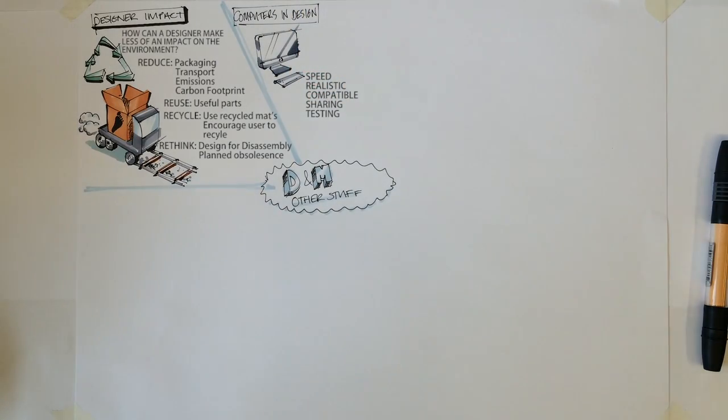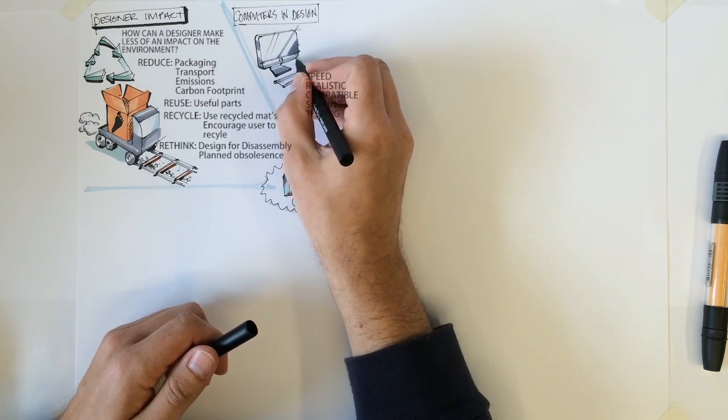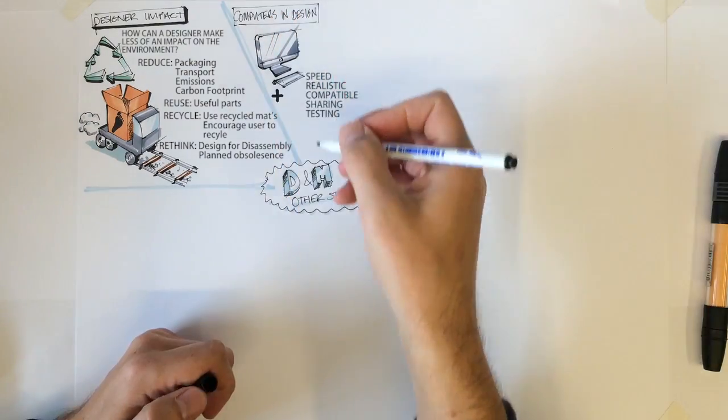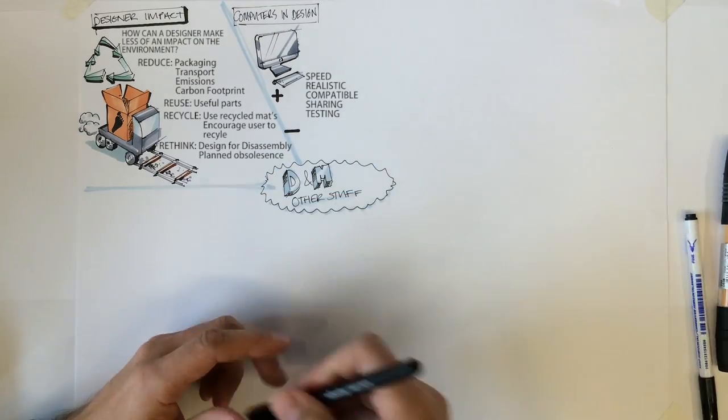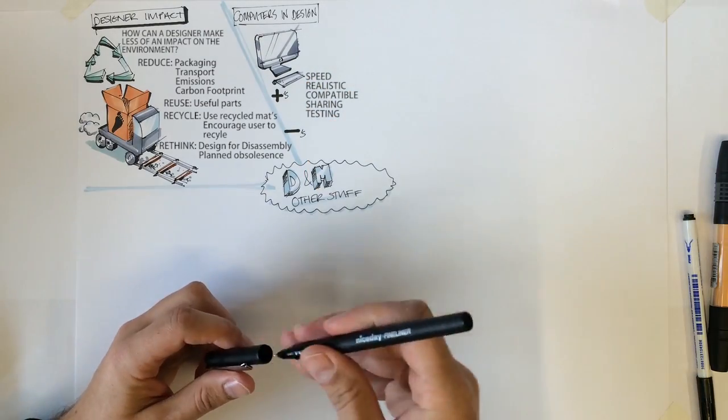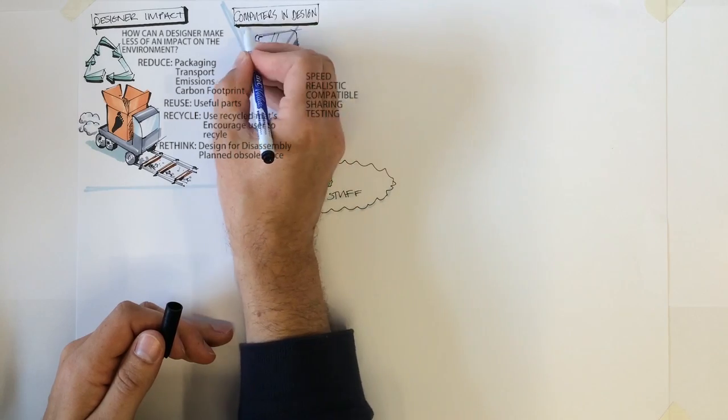Compatible with CNC machining and rapid prototyping. Sharing. Ideas can be sent around the world by email to different members of the design team. Testing. Allows for stress testing or aerodynamic testing to be simulated rather than building prototypes.